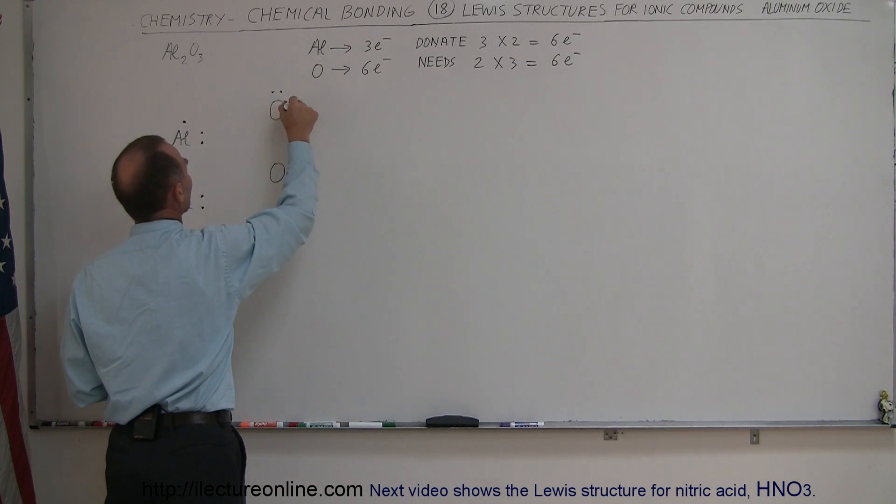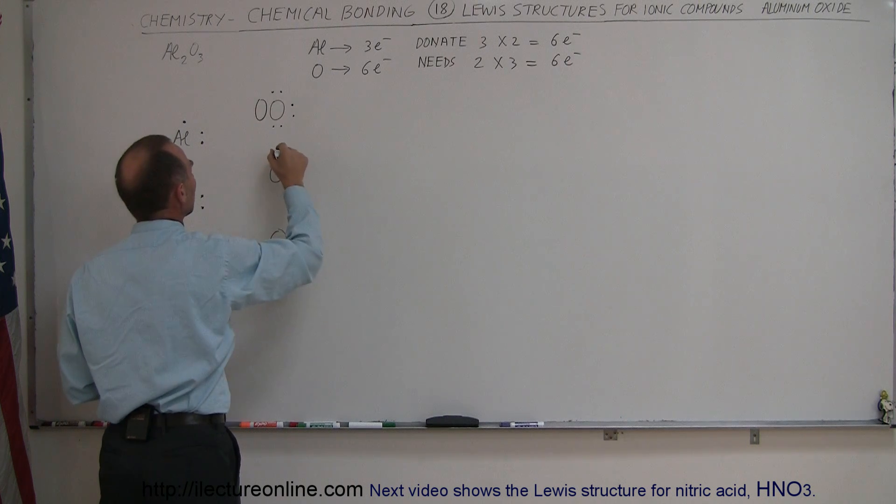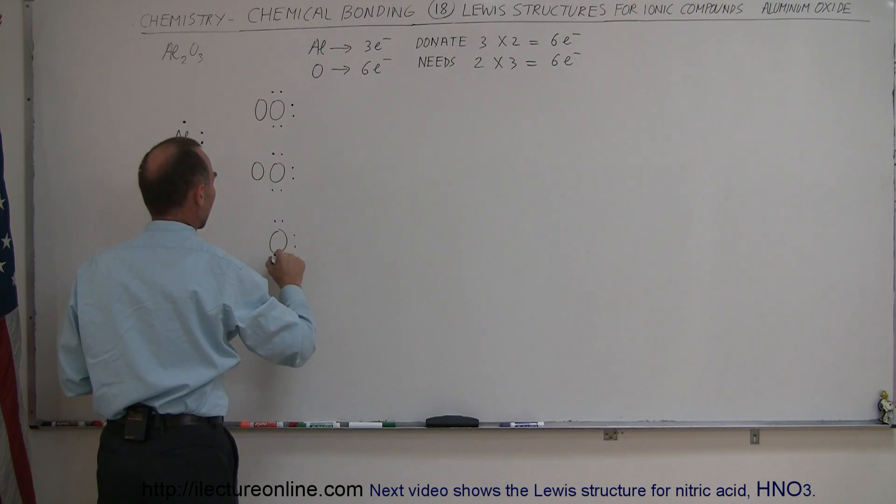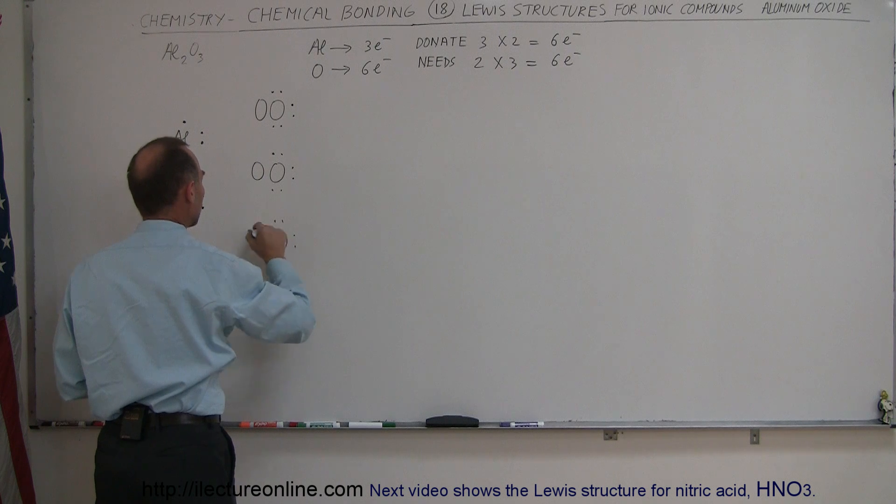Notice that each of the oxygen has six valence electrons which means it has room for two more. And here these are six valence electrons and room for two more and six valence electrons and room for two more.